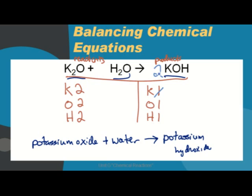That makes us have 2 potassium, 2 times 1 for oxygen, and 2 hydrogen. And that is now a balanced equation.